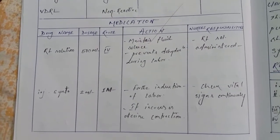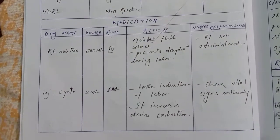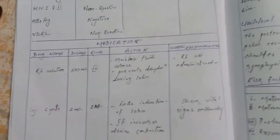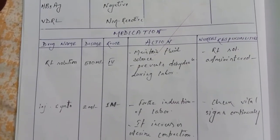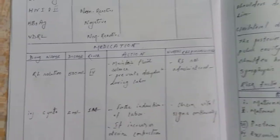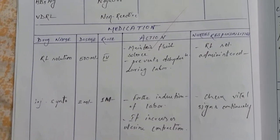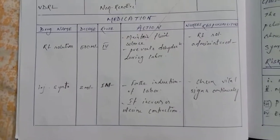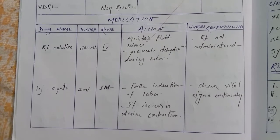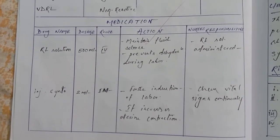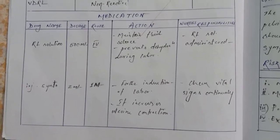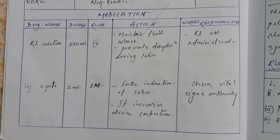Medications: Ringer's lactate (RL) solution 500 mL IV — action: maintains fluid balance to prevent dehydration during labor; nurses' responsibility: administer as prescribed. Injection oxytocin 2 mL IM — for induction of labor, increases uterine contraction; nurses' responsibility: check vital signs continuously.